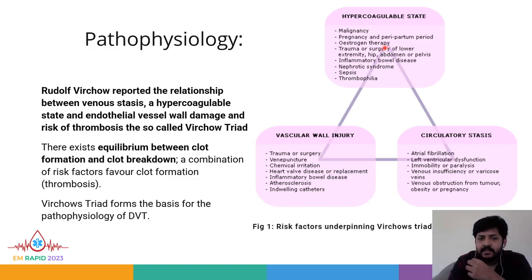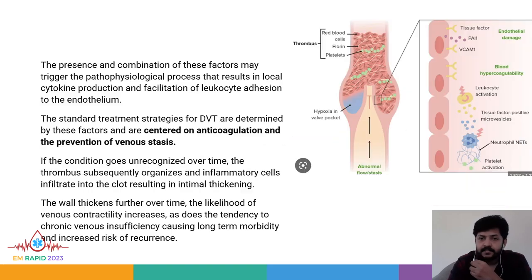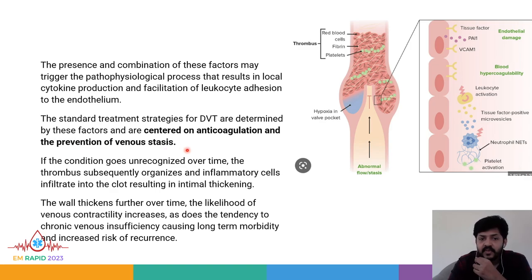There exists an equilibrium between clot formation and clot breakdown. A combination of these risk factors, if it favors clot formation, will cause deep vein thrombosis. The Virchow's Triad forms the basis for the pathophysiology of DVT. The presence and combination of these factors may trigger the pathophysiological process resulting in local cytokine production and facilitation of leukocyte adhesion to the endothelium. Standard treatment strategies are centered on anticoagulation and prevention of venous stasis.